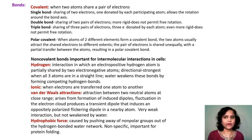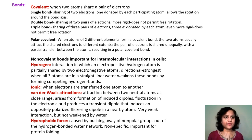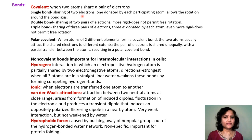Covalent bonds are formed when two atoms share a pair of electrons. Single bonds involve the sharing of two electrons, each donated by each participating atom. This type of bond allows rotation around the bond axis, which is not seen in double bonds and triple bonds.